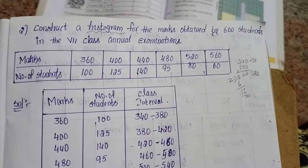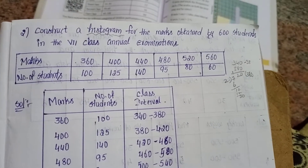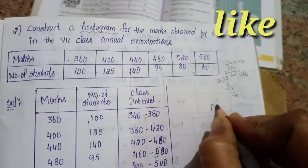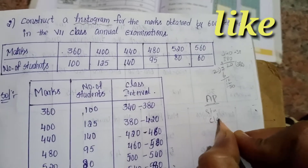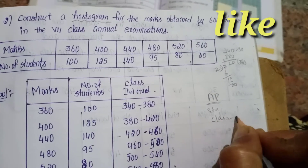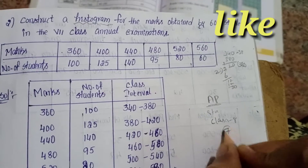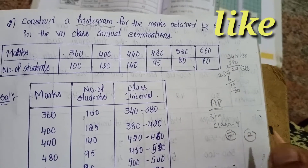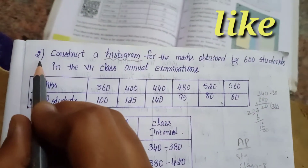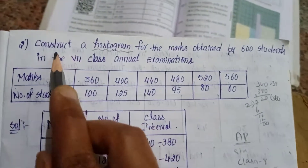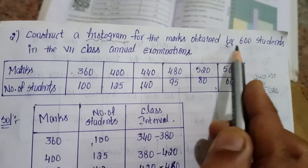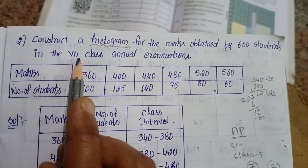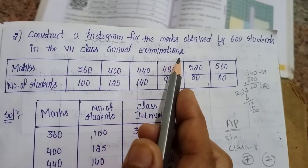Welcome to my channel. Today we will discuss AP Andhra Pradesh State Syllabus Class 8, Chapter Number 7, Class 2, Second Question, Exercise 7.3. Construct a histogram for the marks obtained by 600 students in the 7th class Annual Examination.